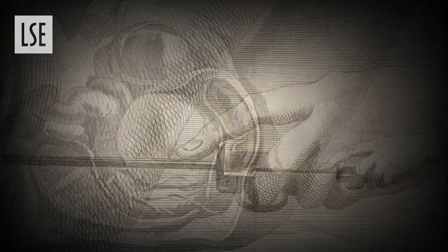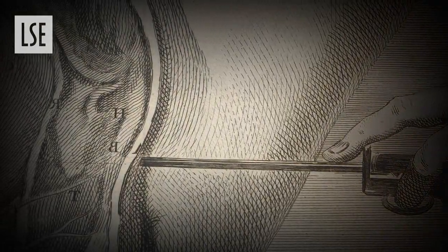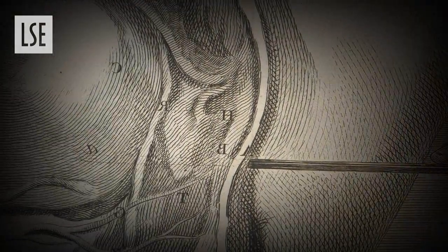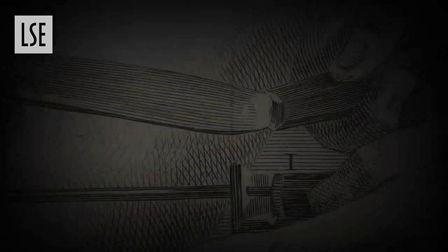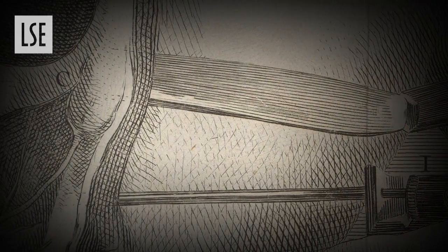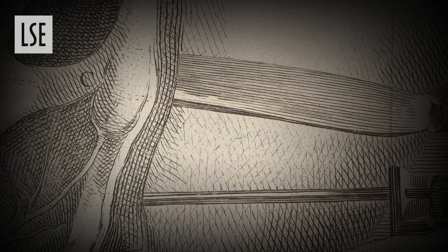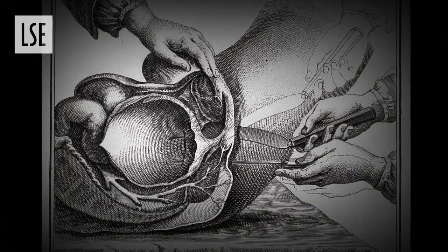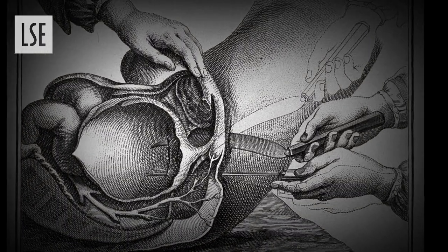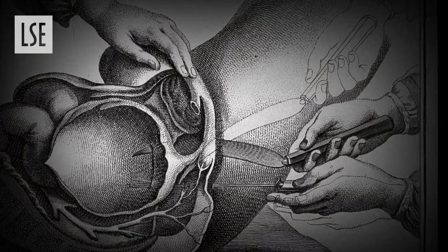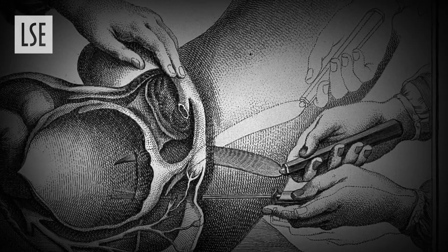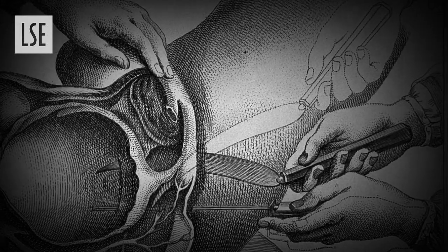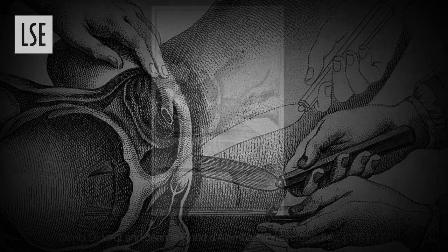First, the use of a probe into the bladder, and then the cutting of the knife following the cannula of the probe into the bladder on the second image. These very same images were used by the Encyclopédie of Diderot et d'Alembert, but they also added information by using dotted lines to show a second position of the knife, which was then extracted from the bladder.